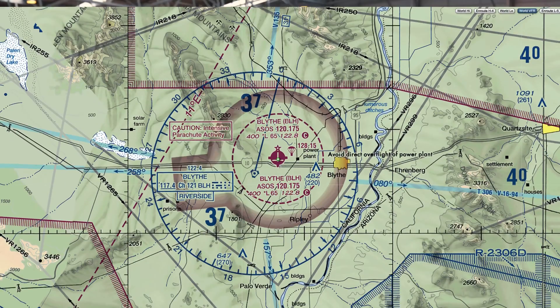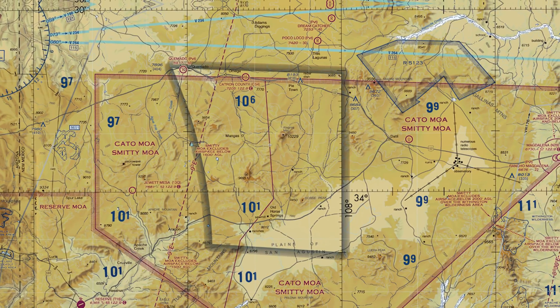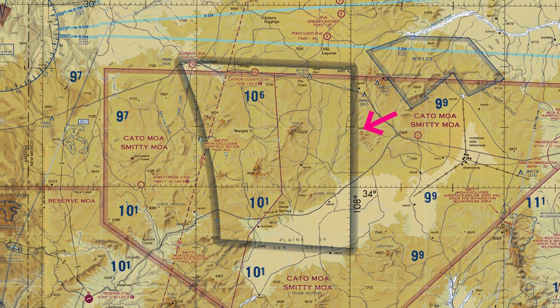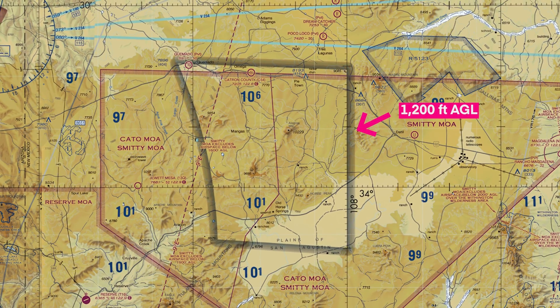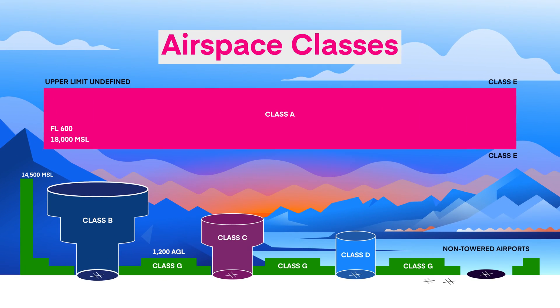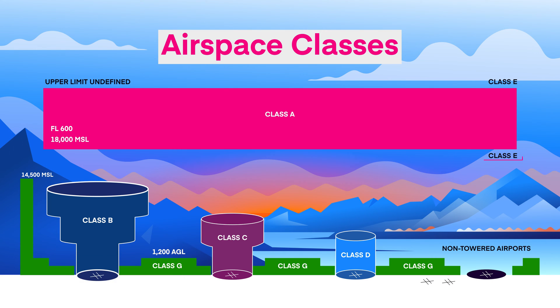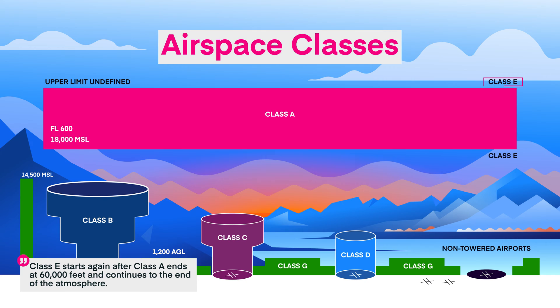Inside these transition areas, you might see a dashed magenta shape around an airport, which indicates that Class E goes all the way down to the surface. Now, in some rare cases, Class E starts at 14,500 feet MSL. You will see these represented with a blue vignette: the faded side represents the typical floor at 1,200 feet AGL, and the solid side represents the floor at 14,500 feet MSL. These are very, very rare across the country. Class E airspace extends up to, but not including, the floor of Class A at 18,000 feet MSL, then starts again on top of Class A at 60,000 feet MSL.